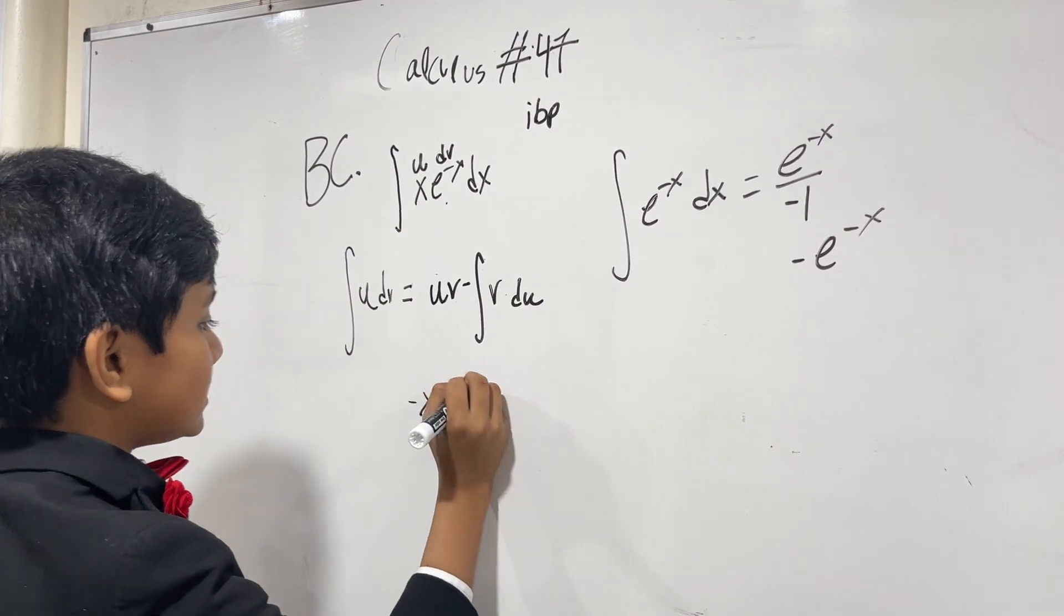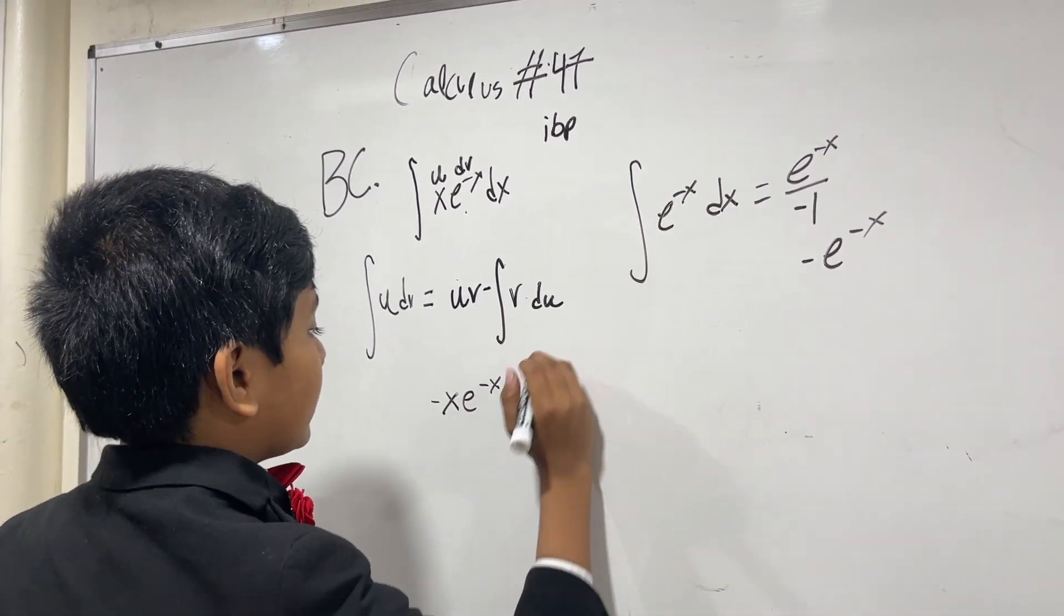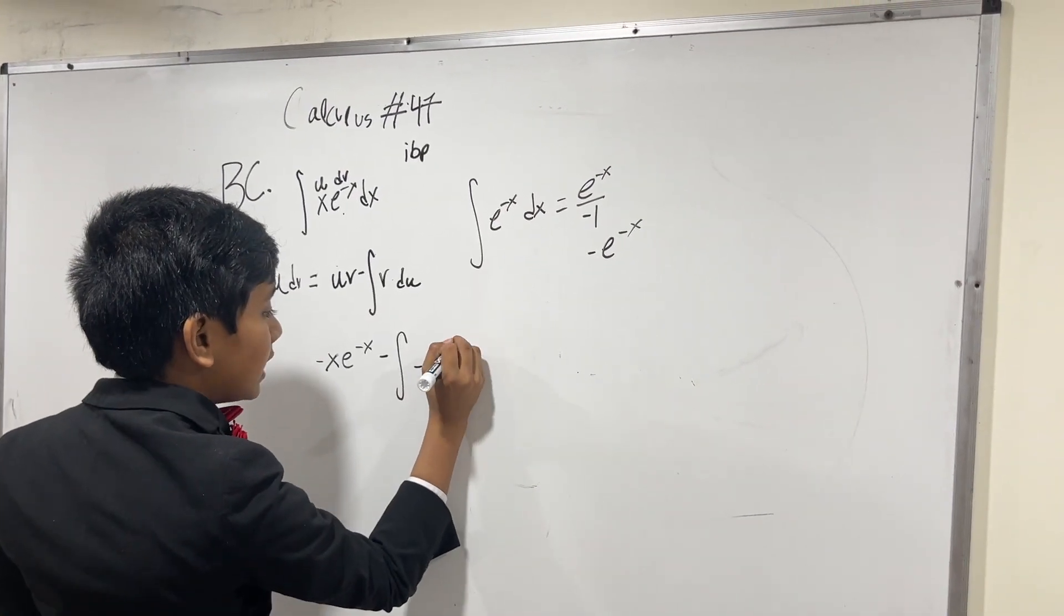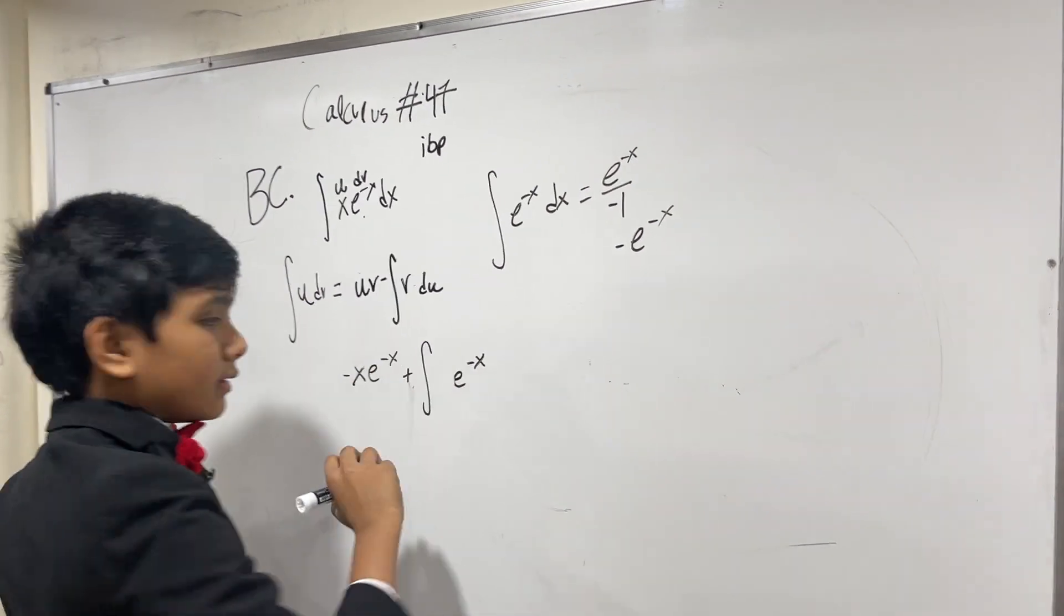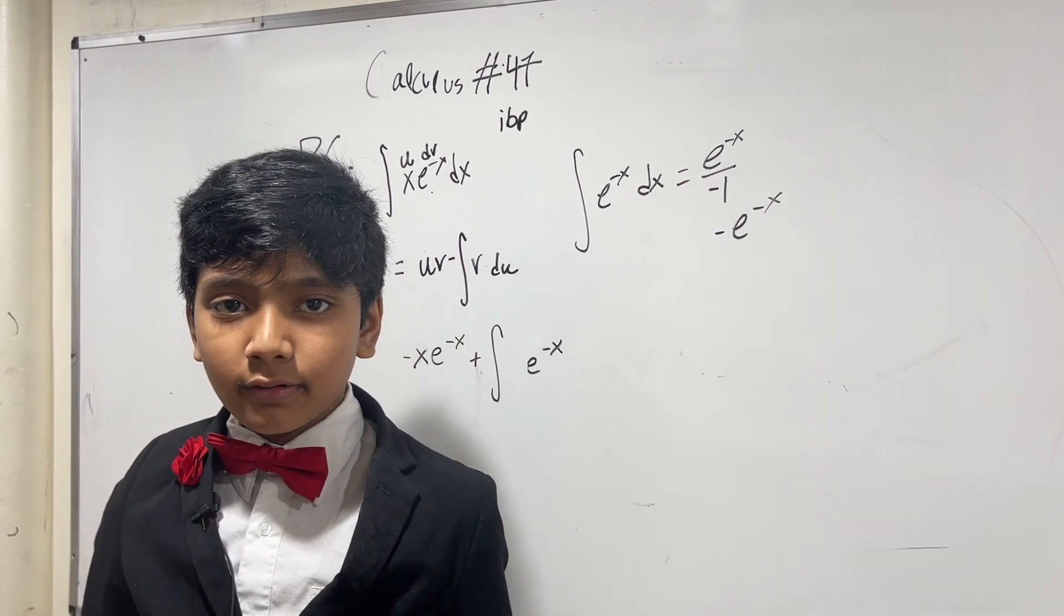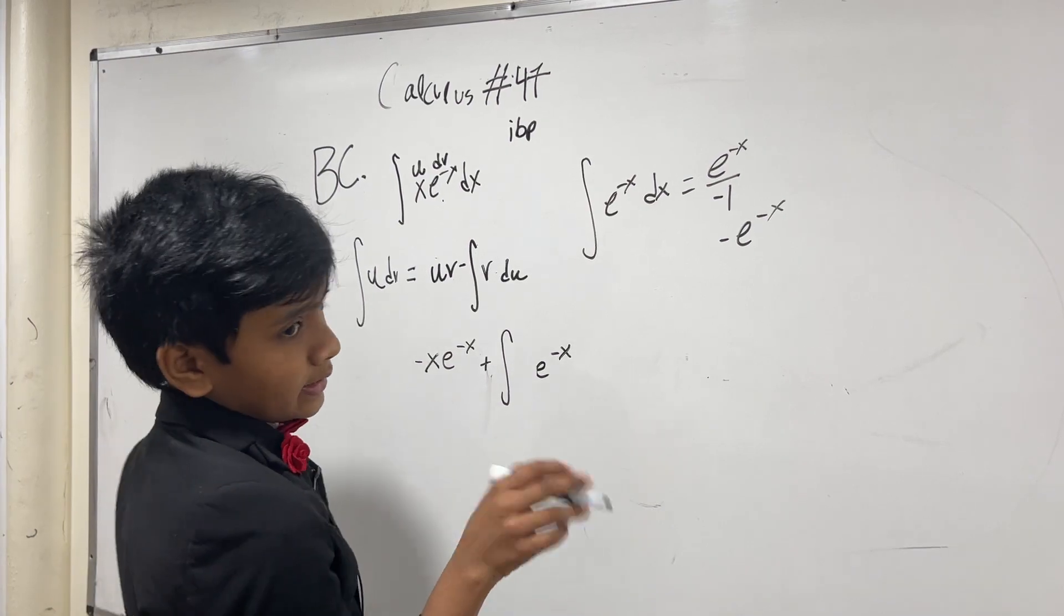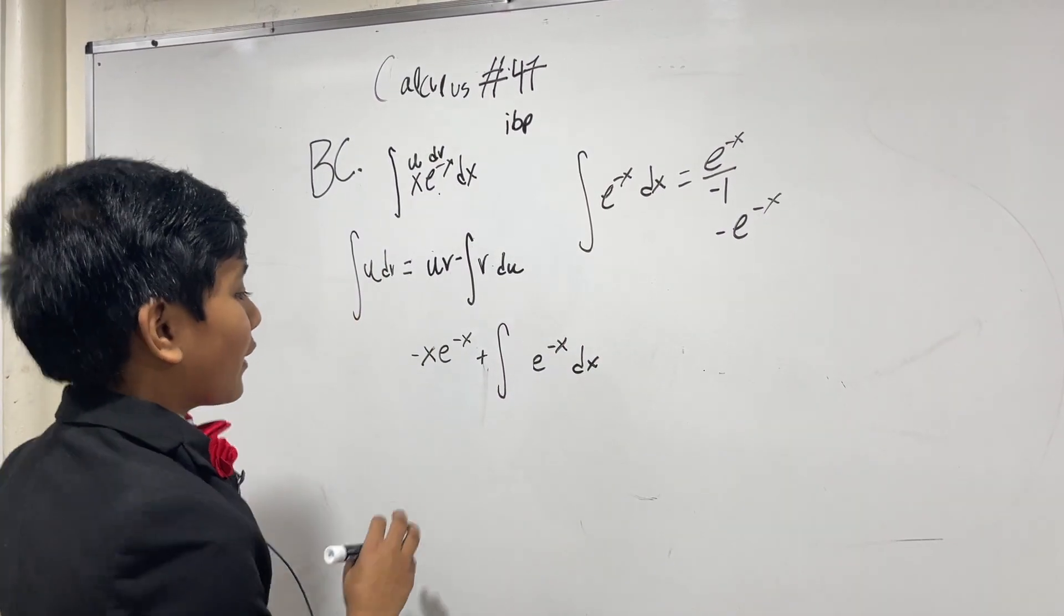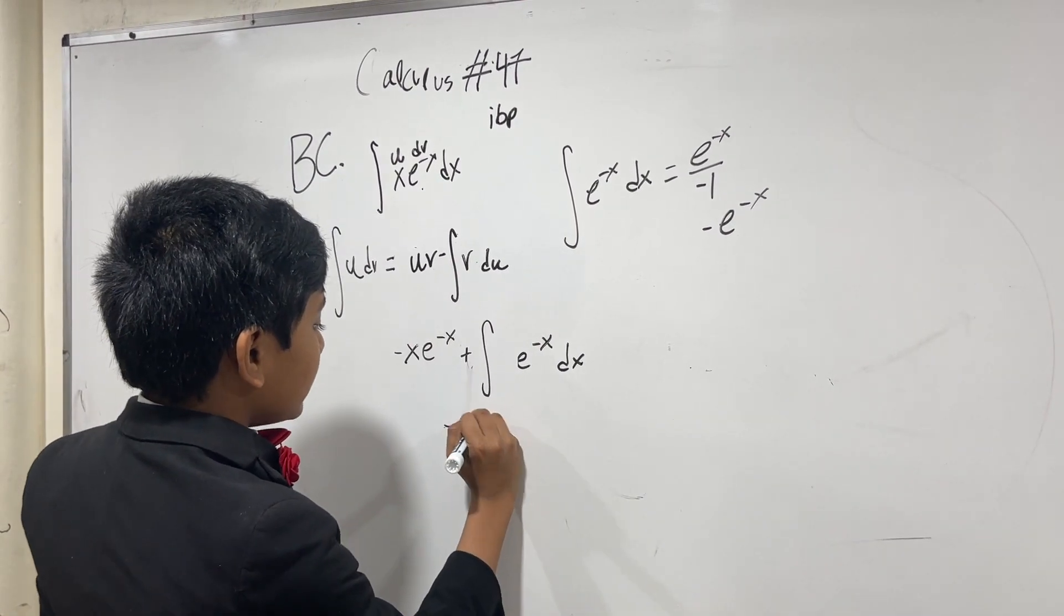So, that means we have U, which is X, times minus e to the minus X. So, minus Xe to the minus X minus the integral of, we know V now, it's minus e to the minus X. We can actually cancel these out and make this a plus sign now. So, then we get e to the minus X and what's the derivative of U? Well, it's actually 1 DX. So, we'll just put the DX right back on there.